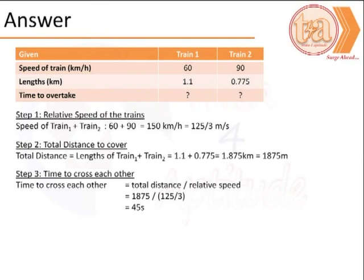Given this information, the time to cross each other is nothing but the total distance by the relative speed of the trains. This gives us 45 seconds.